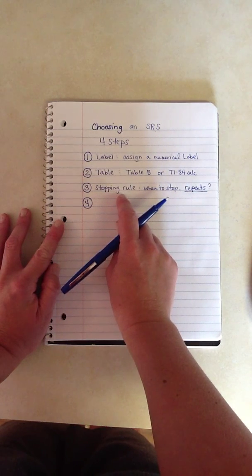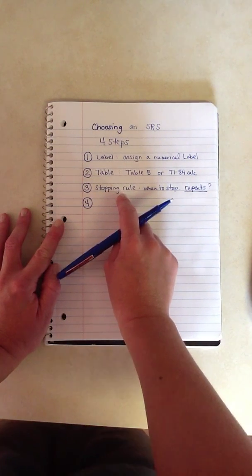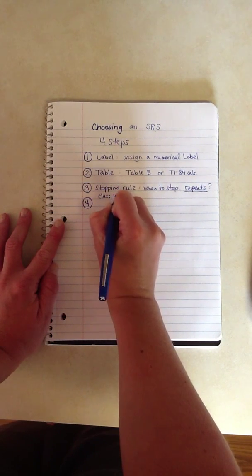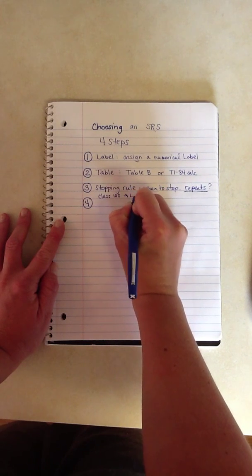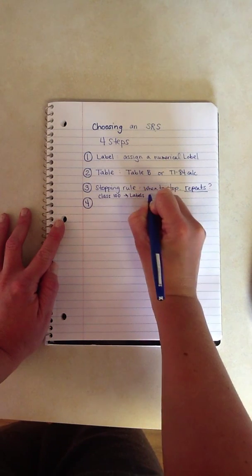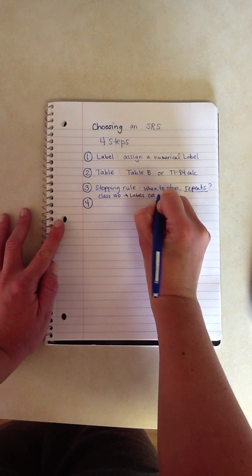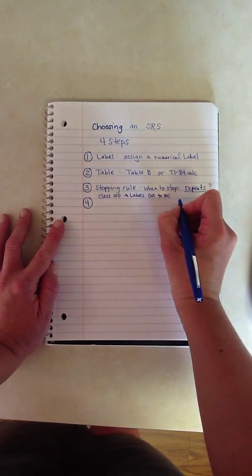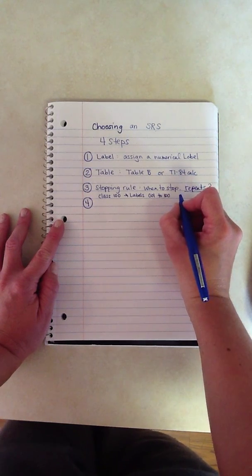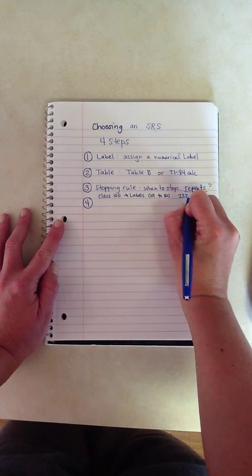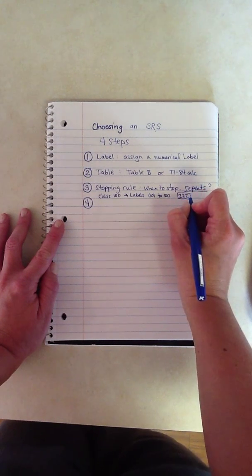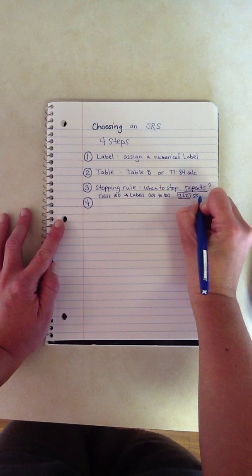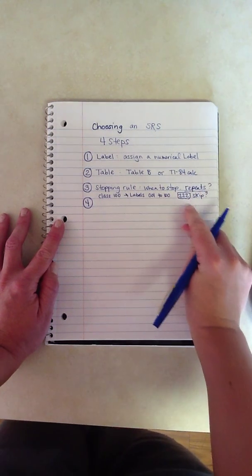Also in this same stopping rule, I would discuss numbers that are outside of your range. So let's say if I had a class of 100 students, my labels would be 001 to 100. If I was using a random number table, what would I do with the number, I don't know, 222? Since this number is not in my range, would I just say to skip it, ignore it? That might be something that you would want to address as well.